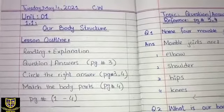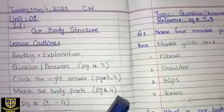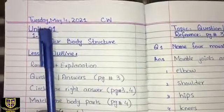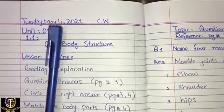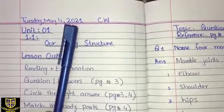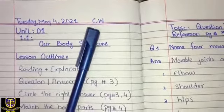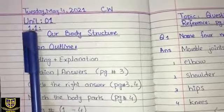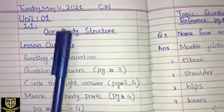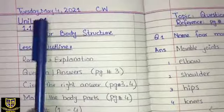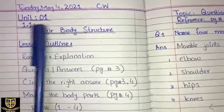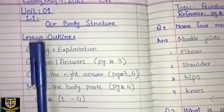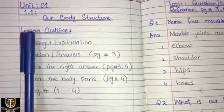Then we will move on to our lesson outline. On the next page, you have to prepare this page. First of all, you have to draw the margin lines. Then you have to write the date — for example, today is Tuesday, May 4, 2021 — and write classwork. You have to write Unit Number 1, Lesson 1.1 – Our Body Structure. These three things you have to underline from a pencil scale.